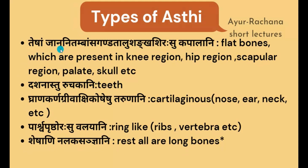Janu refers to the knee, nidamba refers to the hip bone, amsa refers to the scapula, ganda to the thyroid cartilages in the throat region, talu refers to the palate, and shangashirasu refers to the cranial vault. These are all considered to be coming under kapalasthi.